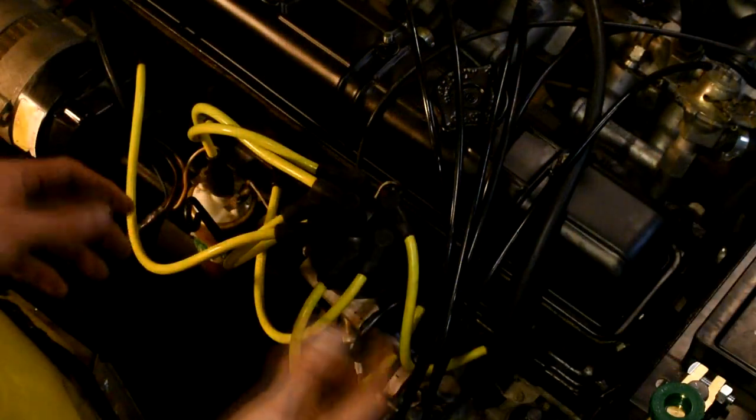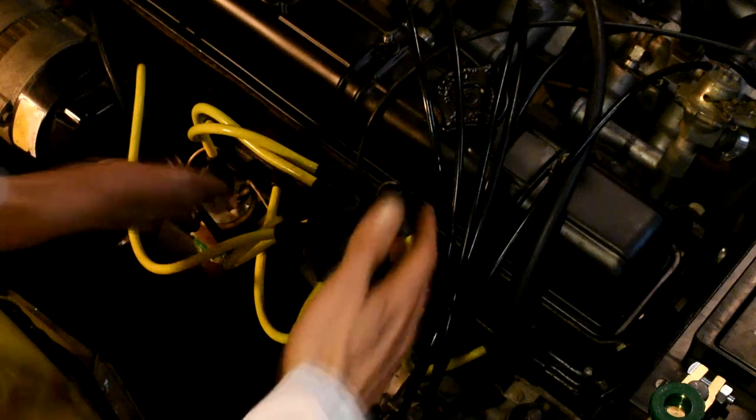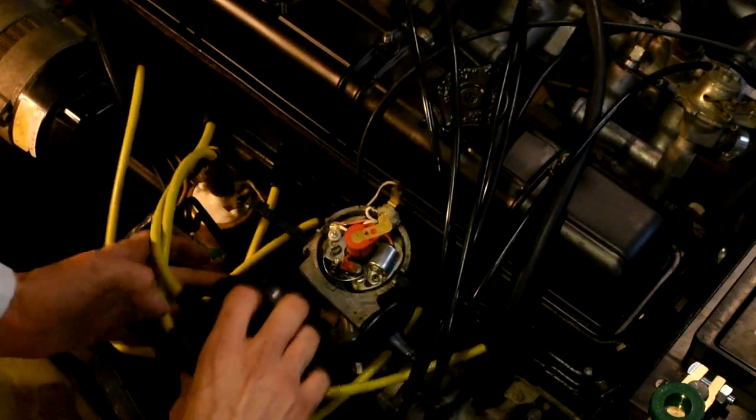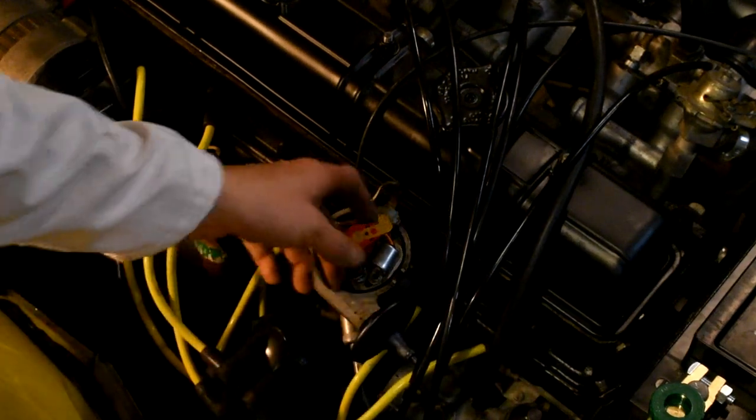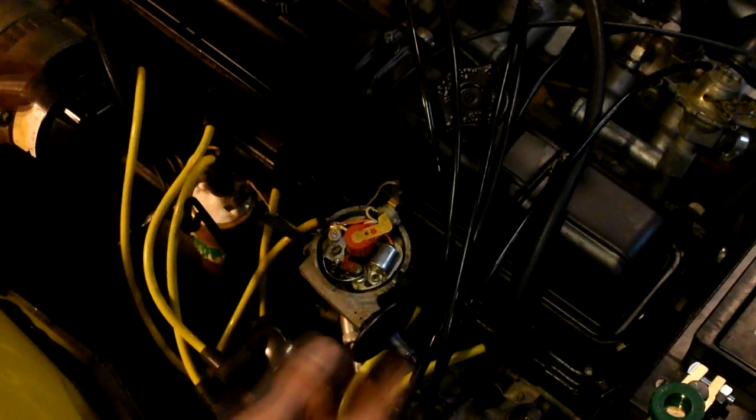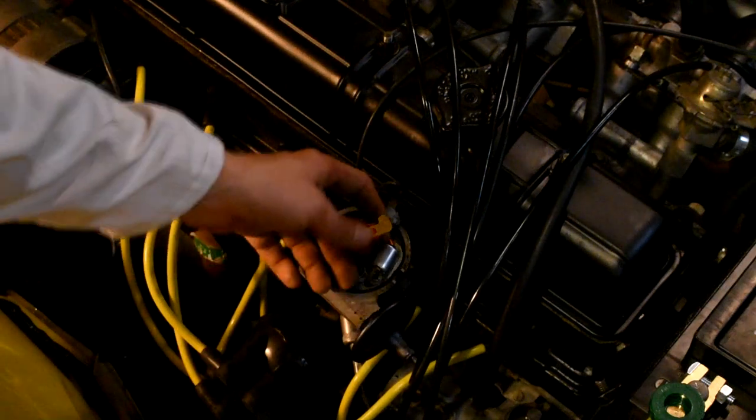The first thing we've got to do in converting this car to electronic ignition is actually remove the cap from the distributor. Now we've already checked the timing of this car and it's firing at 11 degrees before top dead center, but it's always worthwhile checking the timing before you convert your car to electronic ignition.